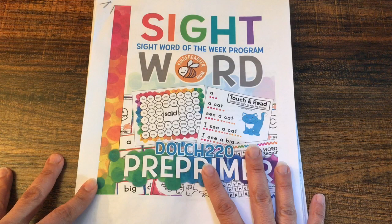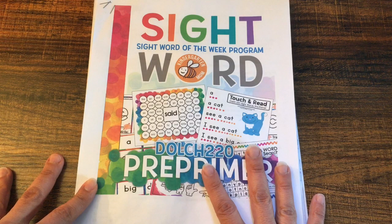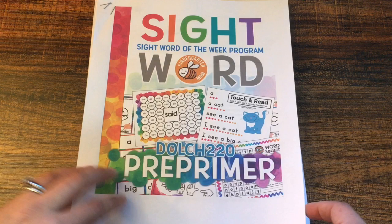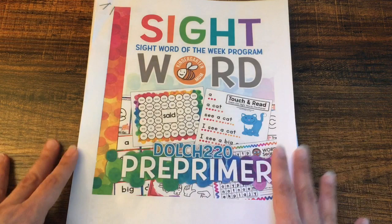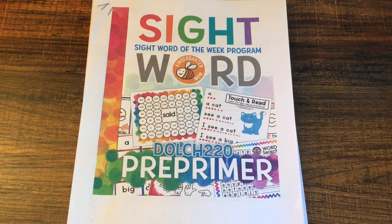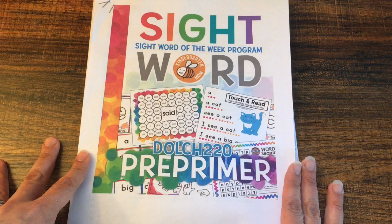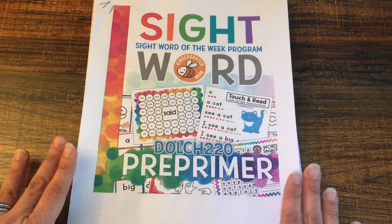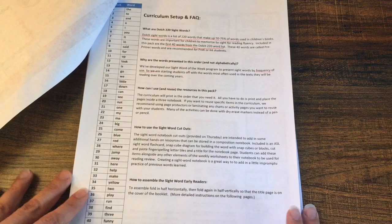So this is the sight word program. This program is for children to learn some pre-primer Dolch words. I didn't print out the whole curriculum. I didn't have enough ink to do that, but I printed out the ones that I was going to be using with my child during the review period. I want to start by saying this is an amazing product. If your child is in pre-K or kindergarten, this is an amazing product to learn sight words. I'm going to show you how this program is set up. The first part, you get the curriculum setup and FAQ.